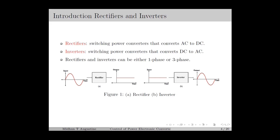Rectifiers are power-electronic circuits that convert AC to DC. Here we are considering controlled rectifiers, in which the magnitude of the output voltage and current can be adjusted by controlling the switch position. Rectifiers can also be uncontrolled, which uses diodes as the switches. Similarly, we have inverters, which are DC to AC converters and convert DC input to AC output.